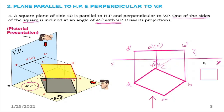I have a PDF link in the description with the problem numbers. This is Problem 3, and the sheet covers Problem 4 as well. We have covered 3 problems in this video: Problem 1, 2, and 3, all involving planes parallel to HP and perpendicular to VP.